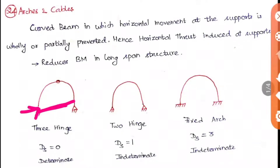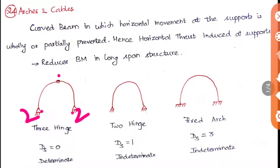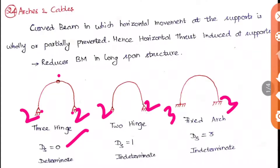There are three types of arches: three-hinged arch, two-hinged arch, and fixed arch. For the three-hinged arch, the degree of static indeterminacy is 4 minus 3 minus 1 (internal hinge) = 0, so it is a determinate structure. The two-hinged arch has DSI = 1 (indeterminate), and the fixed arch has DSI = 3 (indeterminate).